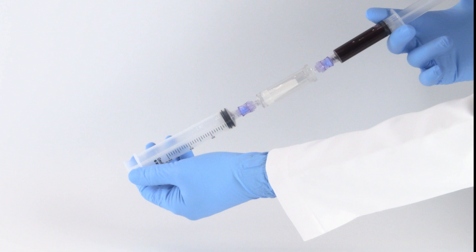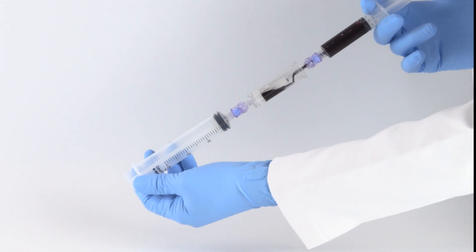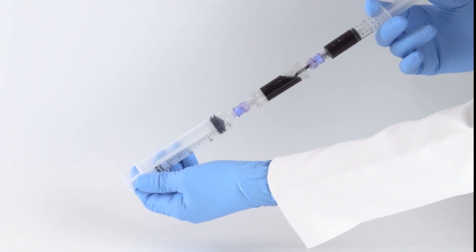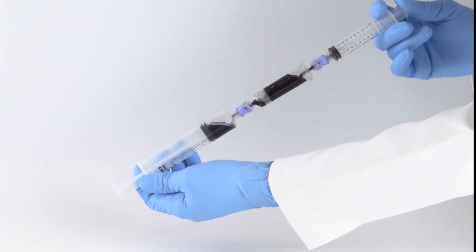Connect each 12 milliliter bone marrow syringe to the import of the bone marrow filter. Then, connect a 30 milliliter syringe to the outport of the filter. Filter by injecting the bone marrow from each 12 milliliter syringe through the filter into the 30 milliliter syringe.